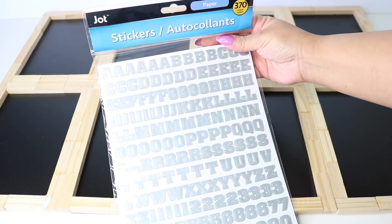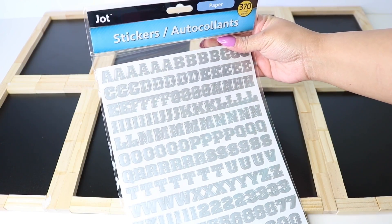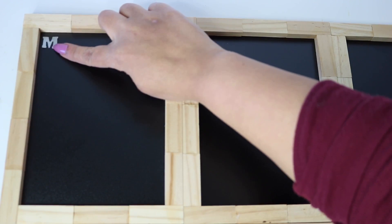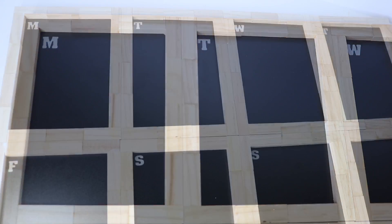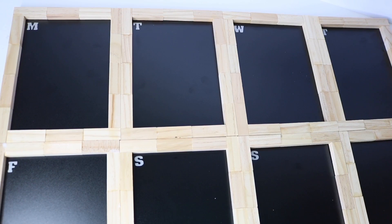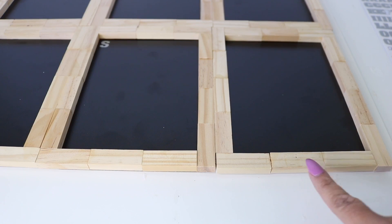So now to add the letters, I use these Dollar Tree stickers. They do come in different colors. I added them to the top left corner, starting from Monday all the way down to Sunday, but you can start from Sunday to Monday—it's totally up to you.